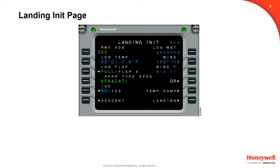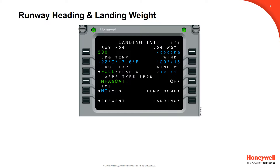The landing init page provides for entry of specific information for landing and go-around calculations, in addition to landing performance initialization. To perform the landing, the pilot starts by verifying the runway heading on line 1 left. This value is taken from the FMS navigation database, but pilot entries are accepted.